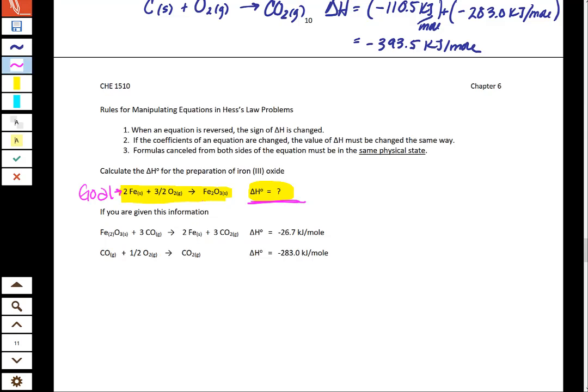Up here is our goal. It's highlighted in yellow. And what I notice is that in our goal, we have an iron 3 oxide compound. In this equation, the first one and the second one, iron 3 oxide is only present once, right here.